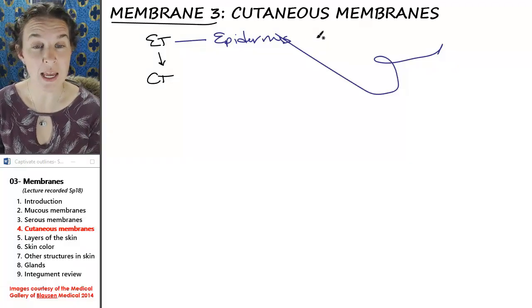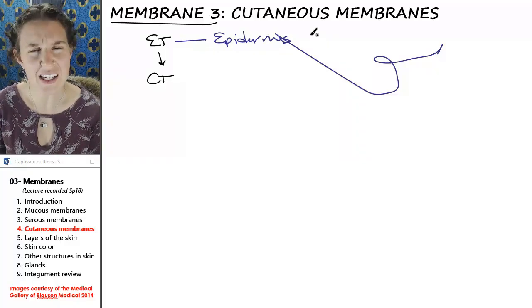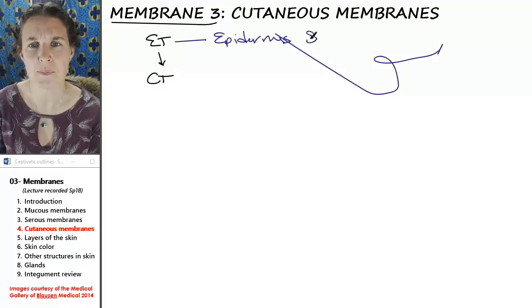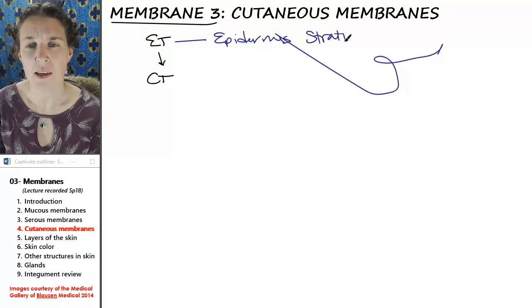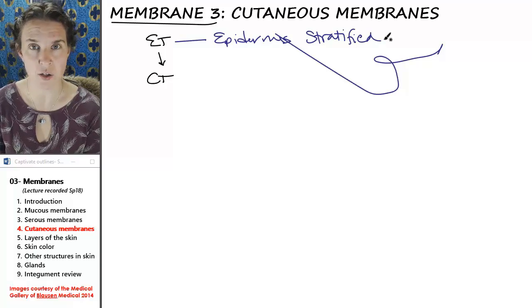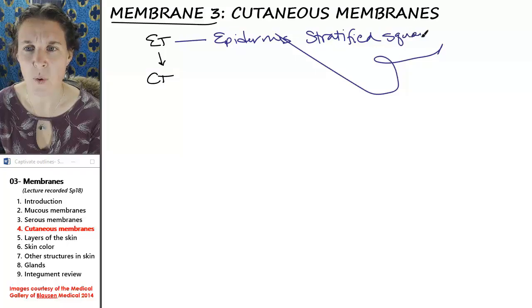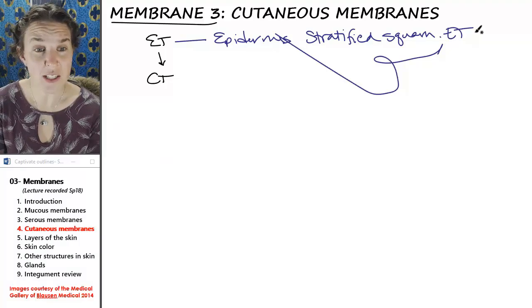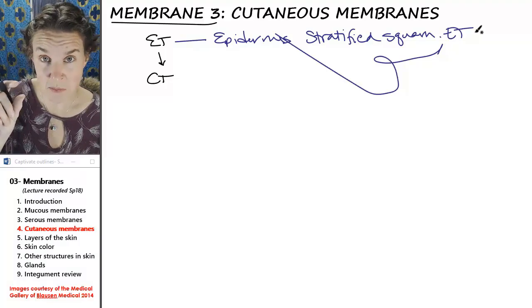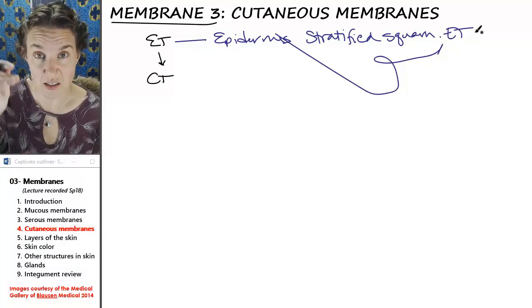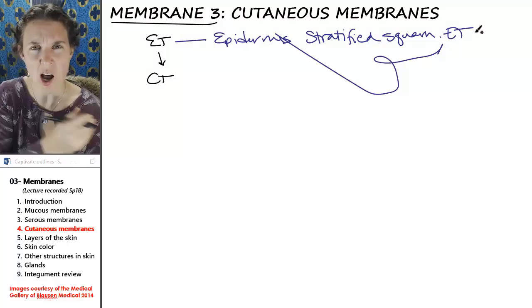The epidermis is made of what kind of epithelium do you think? Hopefully that's not a hard question to answer. Of course, it's stratified squamous epithelial tissue because stratified squamous epithelium is thick, lots of layers, and the layers on top are flat.